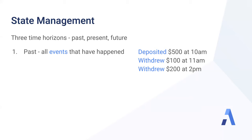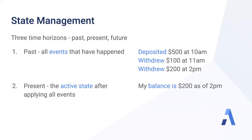The present in the event source model is called the active state. It's the application of all past events. In our example, after all of these events, the current balance in the bank is now $200.